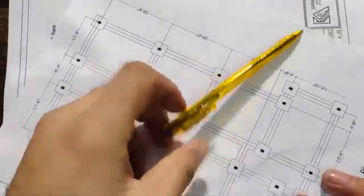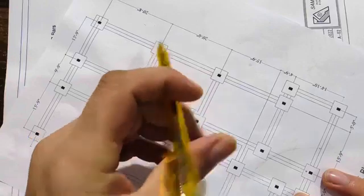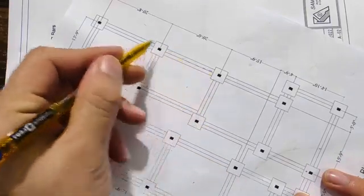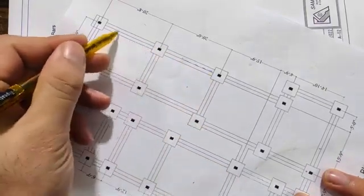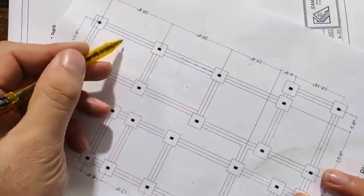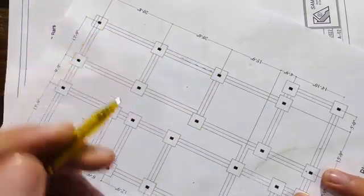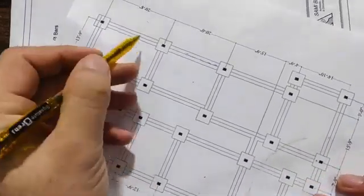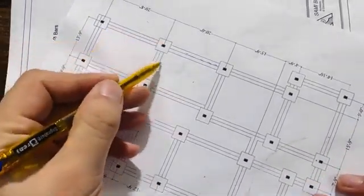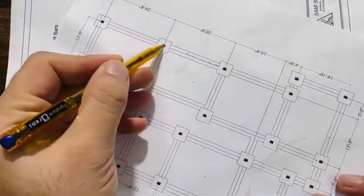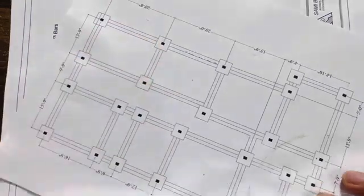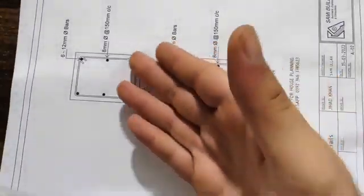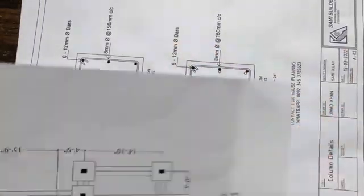Inside this, you can see this is the column, and this is its center line, which can also show you the center line on the other side — like a kind of strip footing. So this is a strip, and these are the footings. Inside this we have a column.